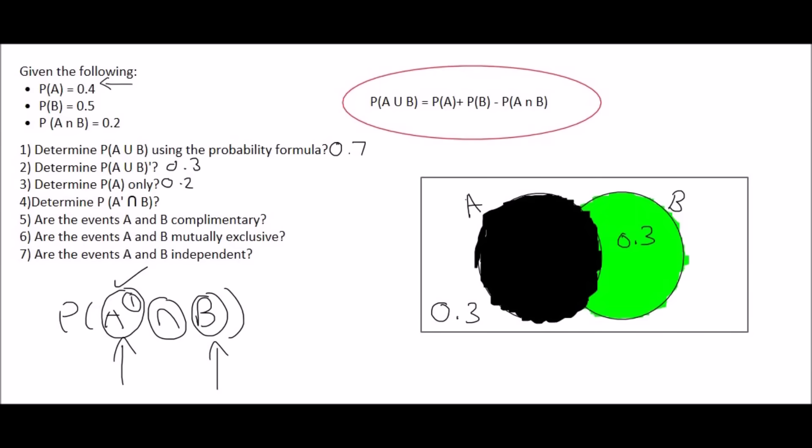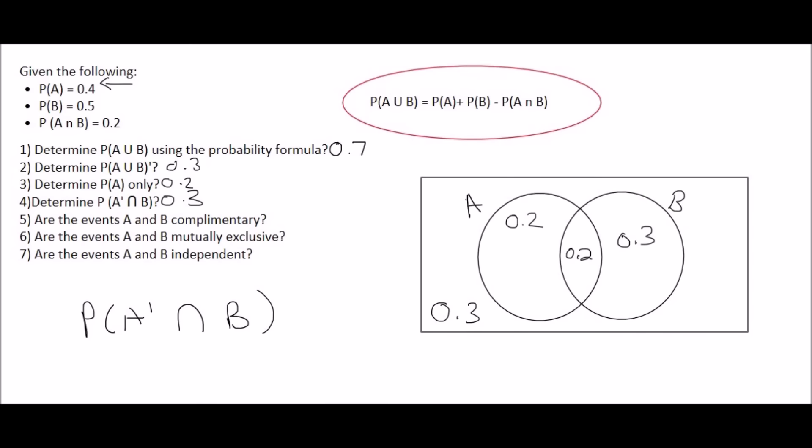Well, that means the answer is over here. And so the answer for that is 0.3. So just once again, when they have this over here, it means and. So what they wanted was the probability for both of these to be happening at the same time. So it mustn't be A, and it must also be B at the same time. So it's all of B, but it mustn't be A.